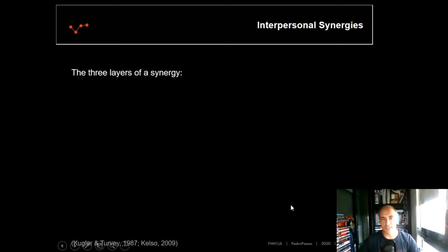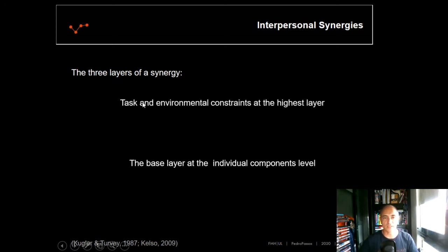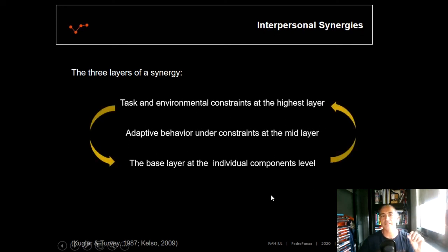There are three layers in a synergy: the base layer, which are the individual components, subjects, players, whatsoever. Then, in the upper layer, the highest layer, we have task and environmental constraints, such as field dimensions, rules of the game, number of opponent players. And it is in the middle of these two layers that adaptive behavior will emerge and this is where synergies will be formed.